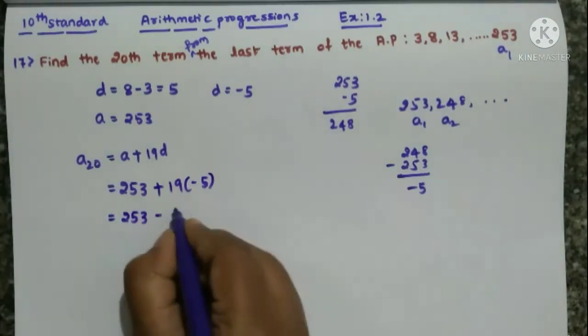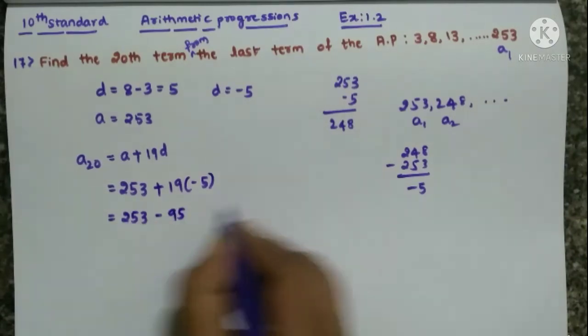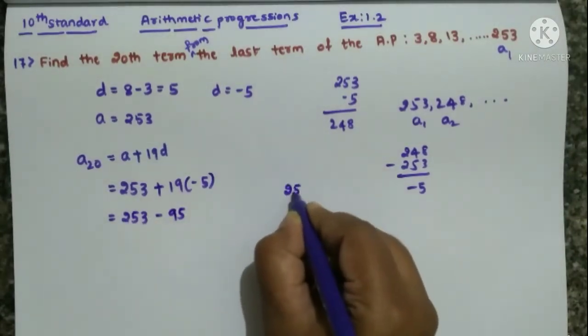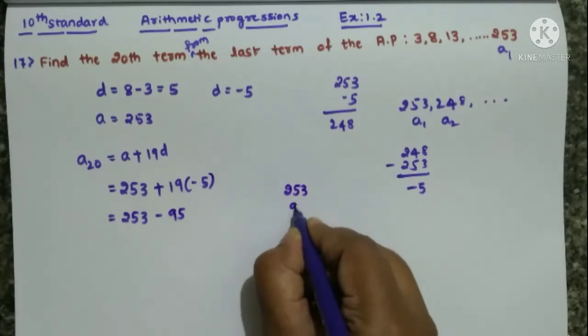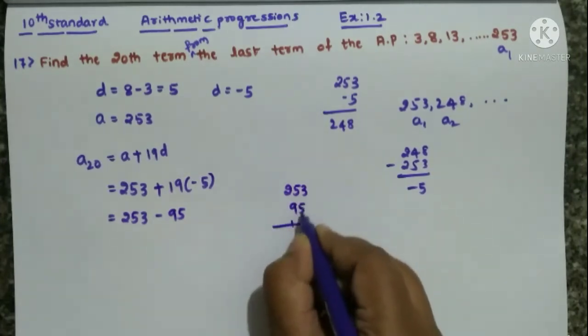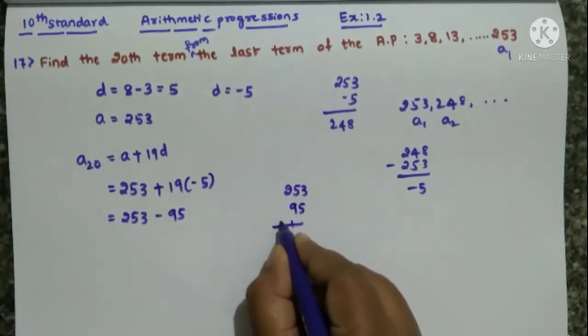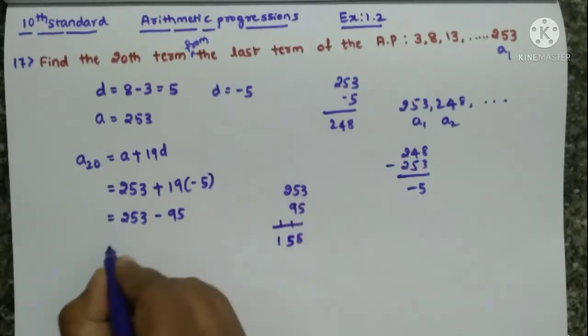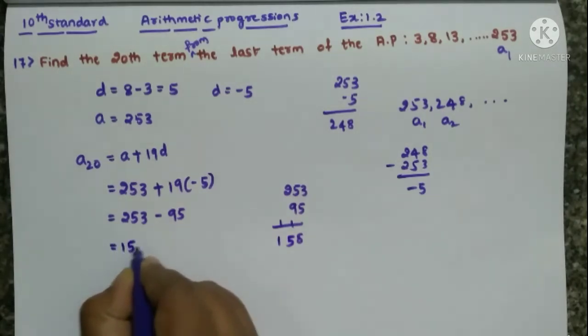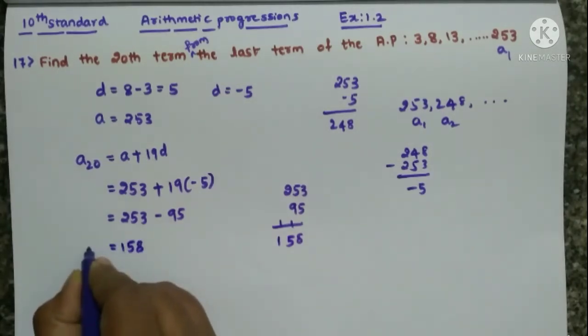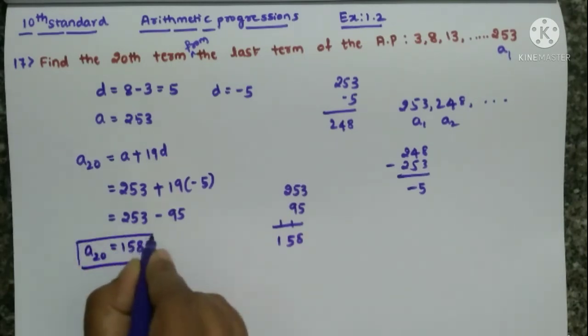253 plus into minus is minus, 19 times 5 is 95. Just subtract it. 253 minus 95. Subtract it: 13 minus 5 is 8, 15 minus 10 is 5. So answer is 158. A20 is 158 here. This is the answer. I hope you understood. This is also an important sum.